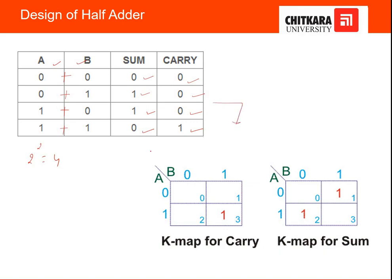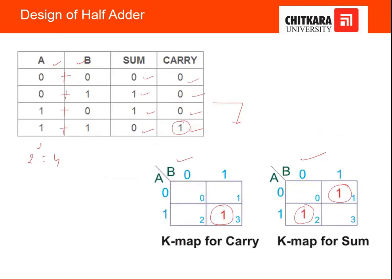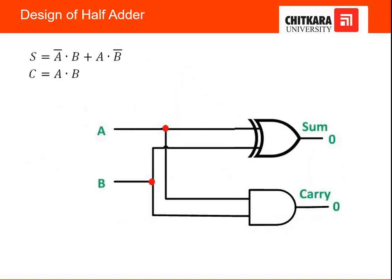Now we make the K-map for sum and the K-map for carry. For carry, there is only one 1 available, placed at that position. For sum, there are two 1s placed accordingly. Since there is no grouping available for sum, we make individual groups: the expression for one group is AB̄, and for the other it is ĀB. So the logic expression for sum becomes ĀB + AB̄, which represents an XOR gate. For carry it becomes A·B, representing an AND gate.